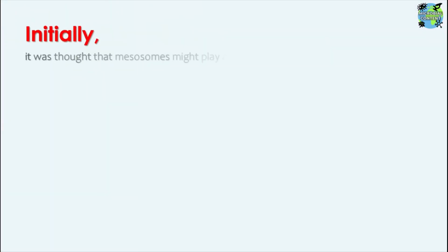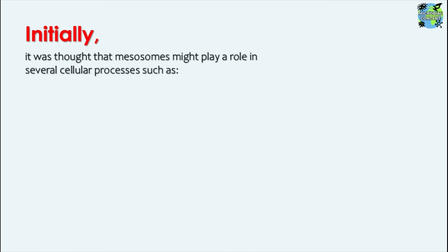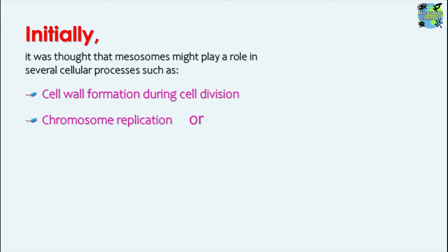Regarding the mesosome, initially it was thought that mesosomes might play a role in several cellular processes, such as cell wall formation during cell division, chromosome replication, or as a site for oxidative phosphorylation. When they were first observed, it was thought they may have such functions in the bacterial cell. But this was not confirmed in further study — they are not found to carry all these functions.